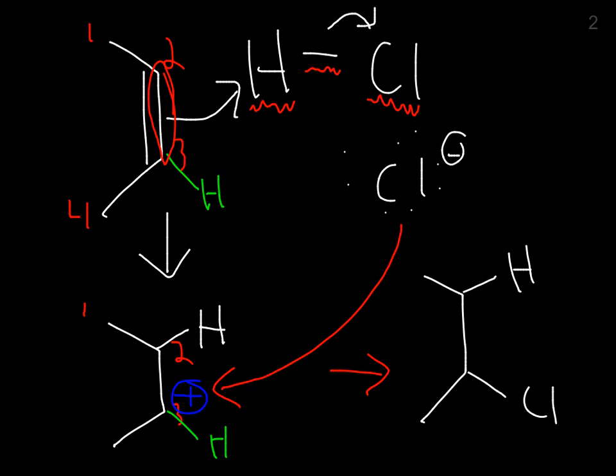Now what would have happened if, say, this molecule wasn't symmetric? Let's say we started with something like this. Now that pi bond is not symmetric. There's not another alkyl group over there. So what would happen? Well, there's two possible outcomes. One would be this pi bond swings out, grabs a hydrogen, those electrons go to the chlorine.